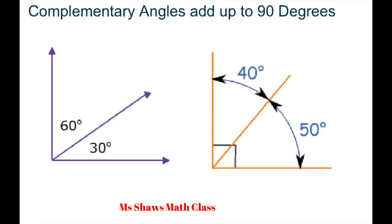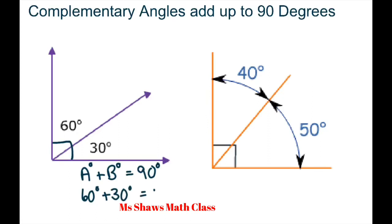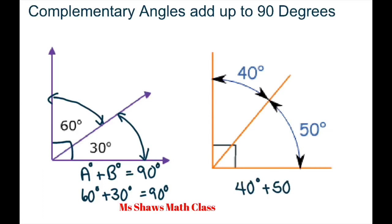Hi everyone, this video is on complementary angles. Complementary angles add up to 90 degrees, forming a right angle. Basically, a plus B equals 90 degrees. In this case, 60 degrees plus 30 degrees equals 90 degrees — there's that angle of 30 degrees and this one is 60 degrees. Similarly, we have 40 degrees plus 50 degrees equals 90 degrees.